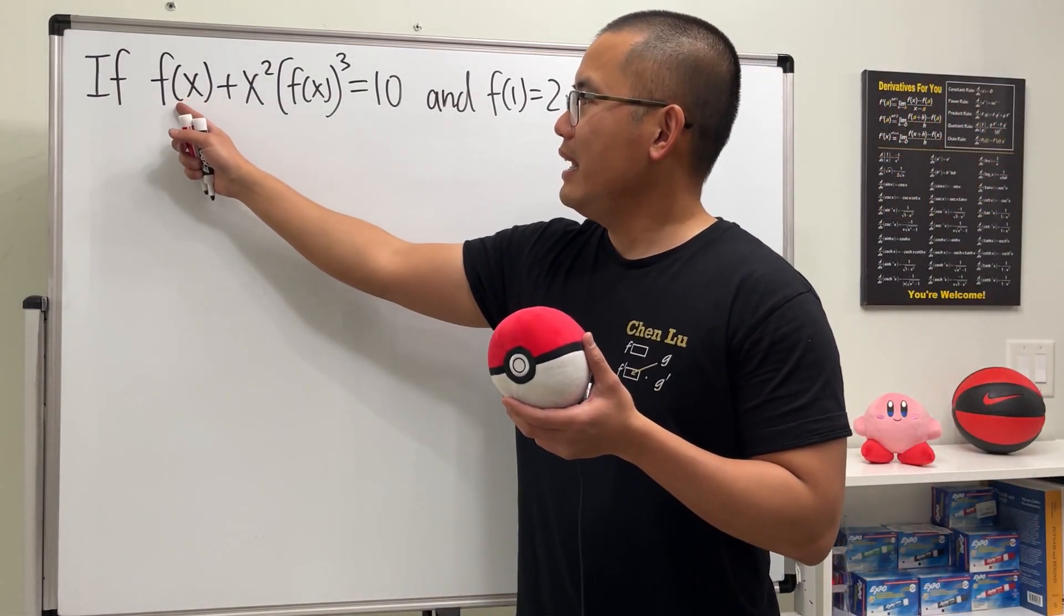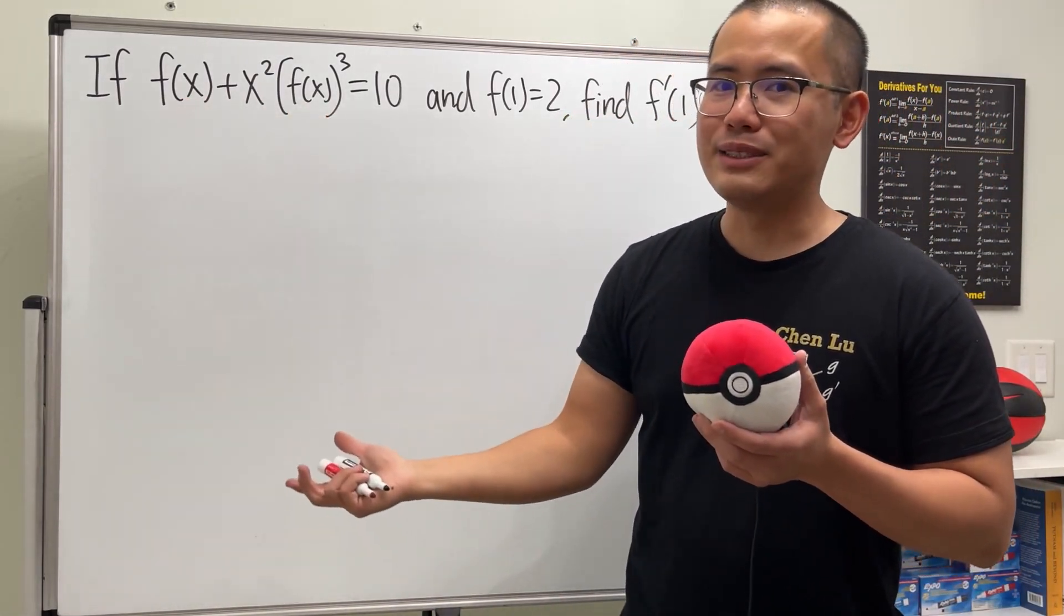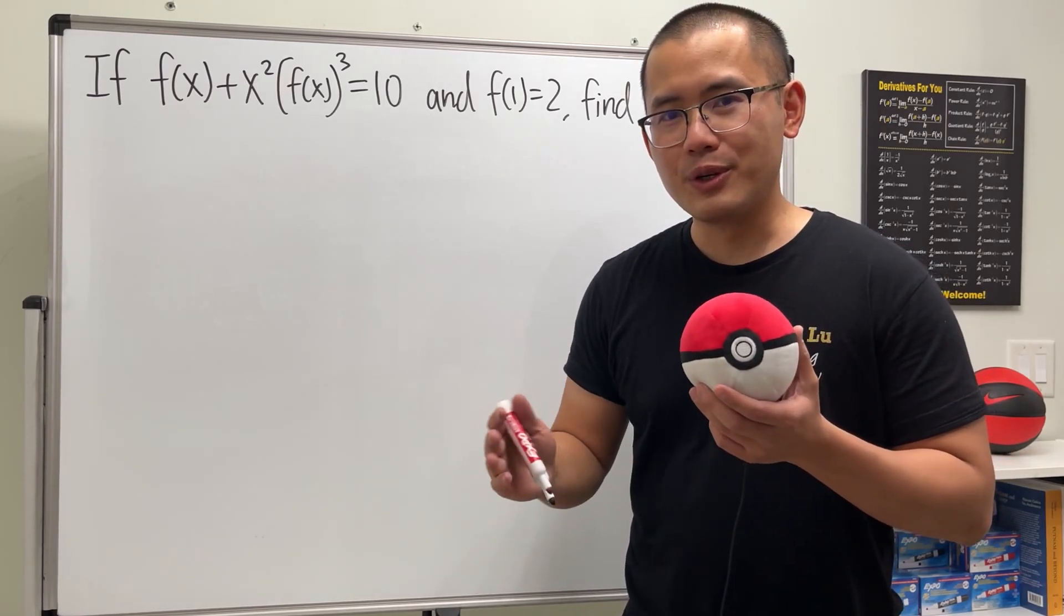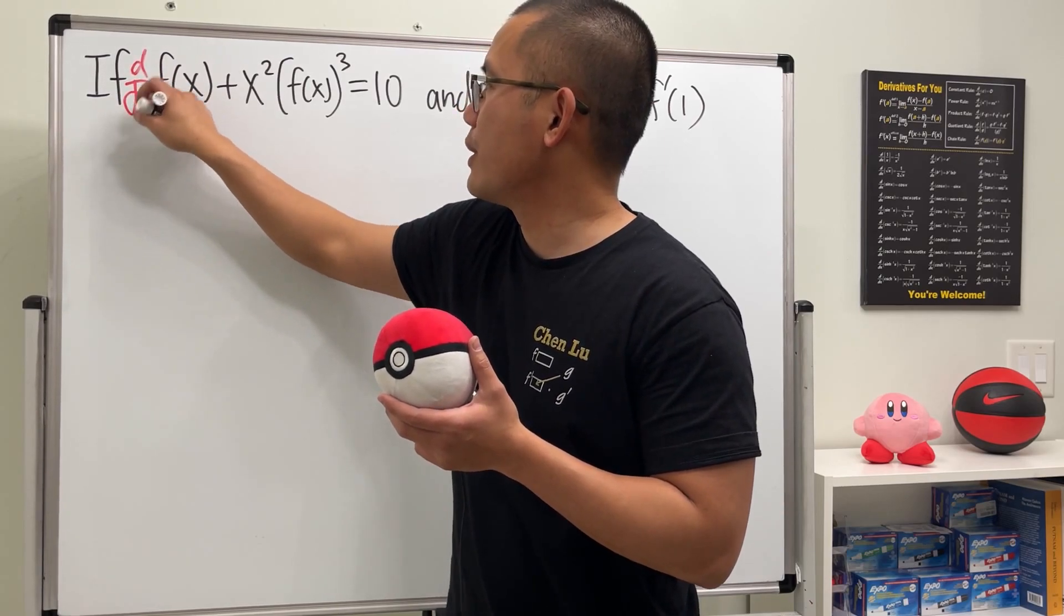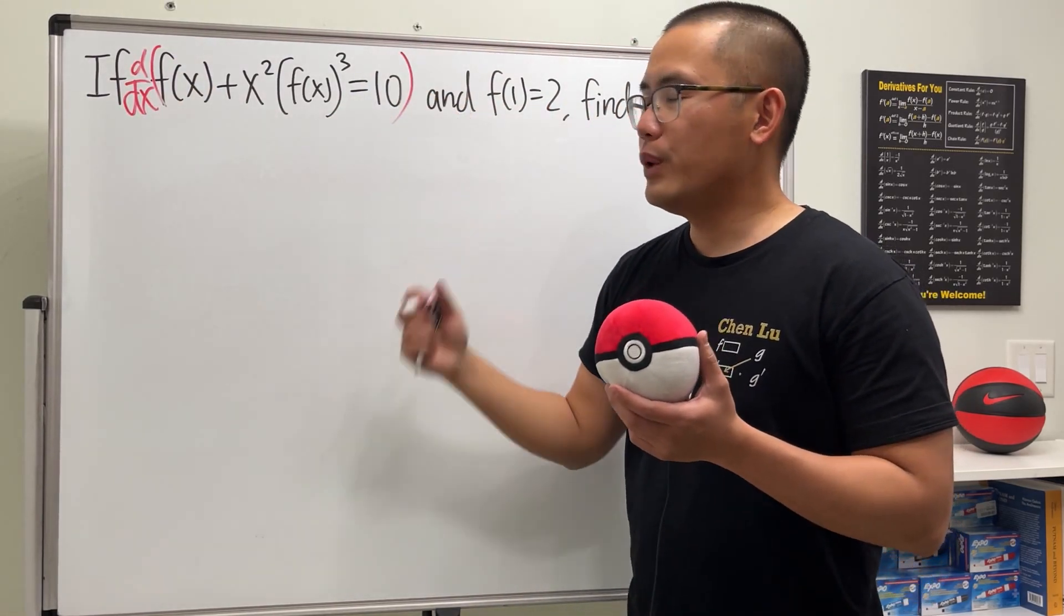Well, as we can see, the function f of x is not isolated, but it's okay. We can just go ahead and use implicit differentiation. So let's go ahead and get to work. I will just put on d dx right here to show that we are differentiating.